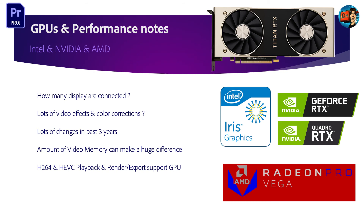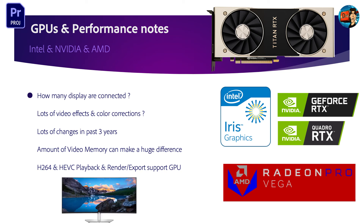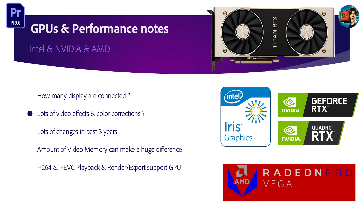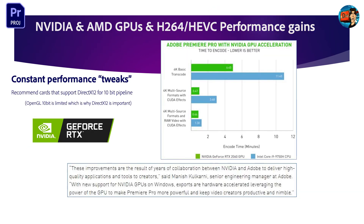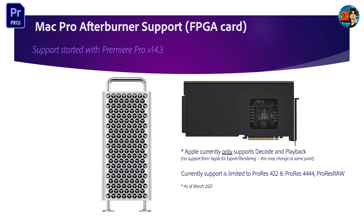When selecting GPUs, there are several important factors: how many displays are connected — it's common to see customers with three or four displays, though an ultra-wide plus one additional display for full-screen output may be preferable. Consider whether lots of GPU-accelerated effects will be used. The amount of memory on a GPU card makes a huge difference during playback, especially inside After Effects. Also ensure recommended cards support DirectX 12 for the 10-bit pipeline changes that are coming.